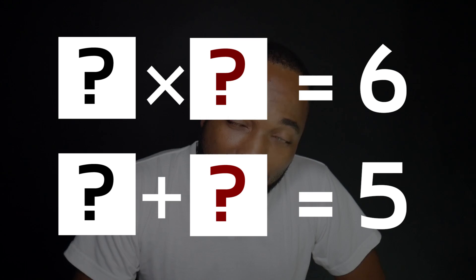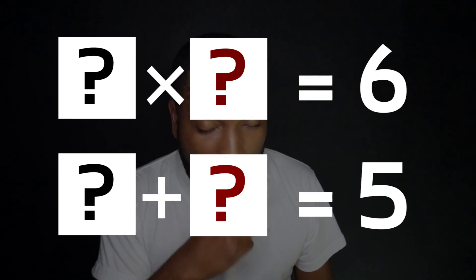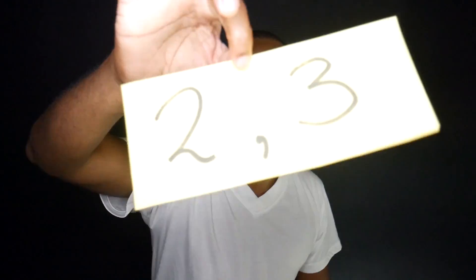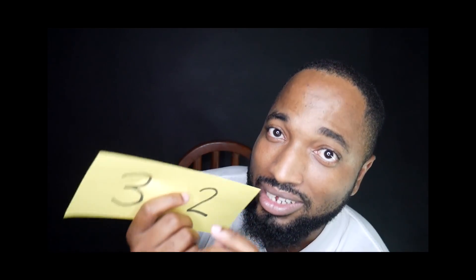These two numbers add up to give me five, and when I multiply the two numbers, I get six. What are the two numbers? You can pause the video and think about it. The answer is two and three — or three and two, same thing, both are correct. Three plus two is five, and three multiplied by two is six. Hopefully everybody still has their ten points.